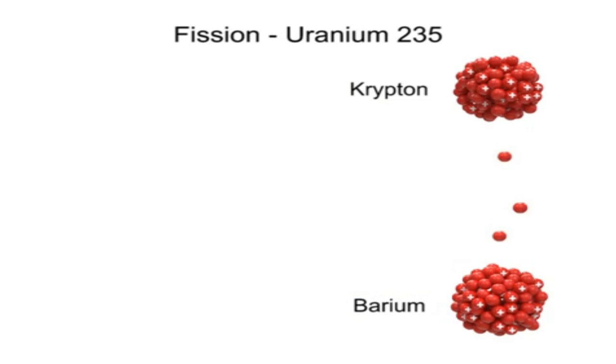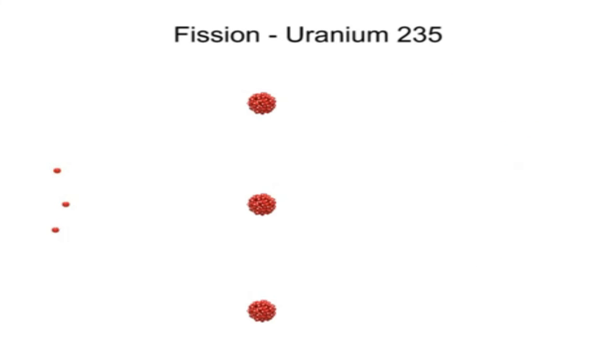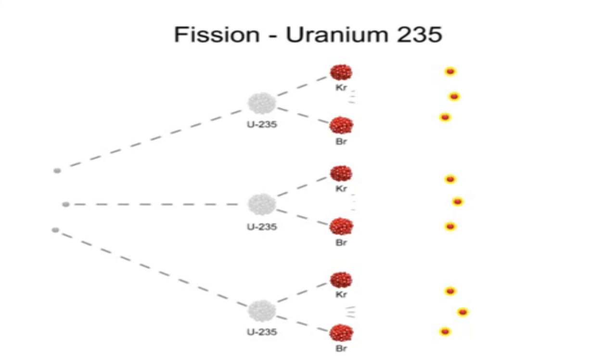Three neutrons are also generated from this powerful release of energy. The three forcefully ejected neutrons can each strike an atom of uranium, resulting in the case of an atomic bomb, a catastrophic chain reaction.